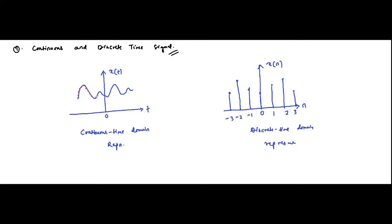For a continuous time signal x(t), the signal exists at each and every point in time. Between any two time instances t1 and t2, every single point in that range has a value of x(t). In the discrete time domain, however, the values of the signal exist only at discrete time instances which take integer values of n. Here n is the discrete time axis and t is the continuous time axis.